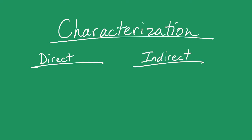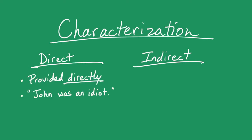Direct characterization is when an author tells you point-blank what you're supposed to think about a character. It's provided directly. For example, if the narrator tells you John was an idiot, well, then you know you're probably supposed to assume John is an idiot.